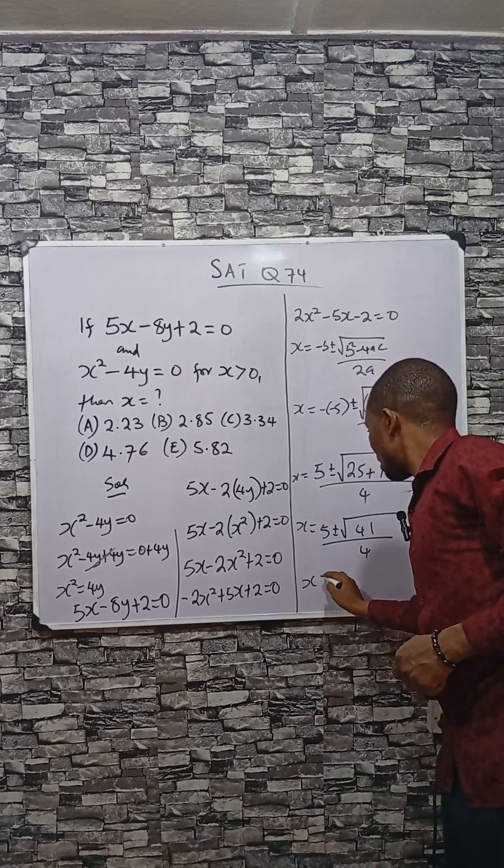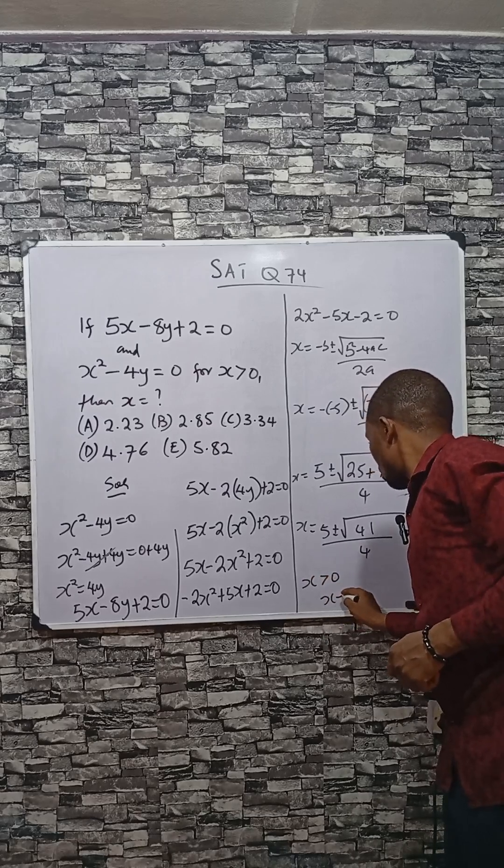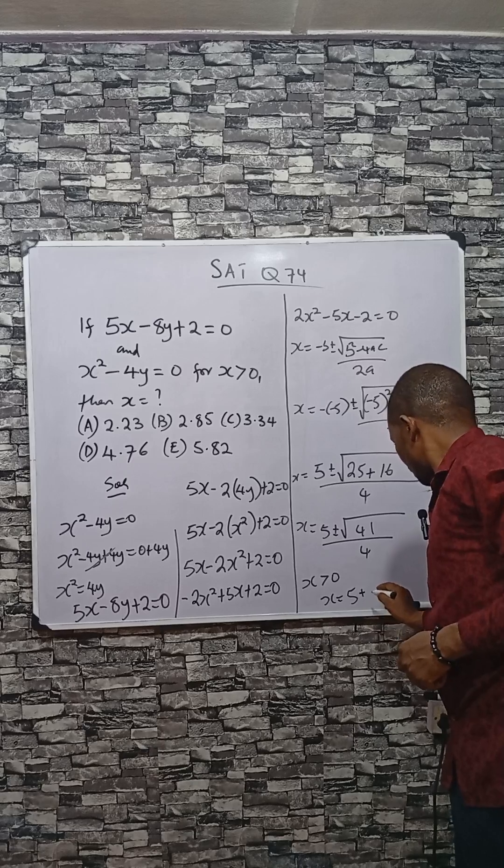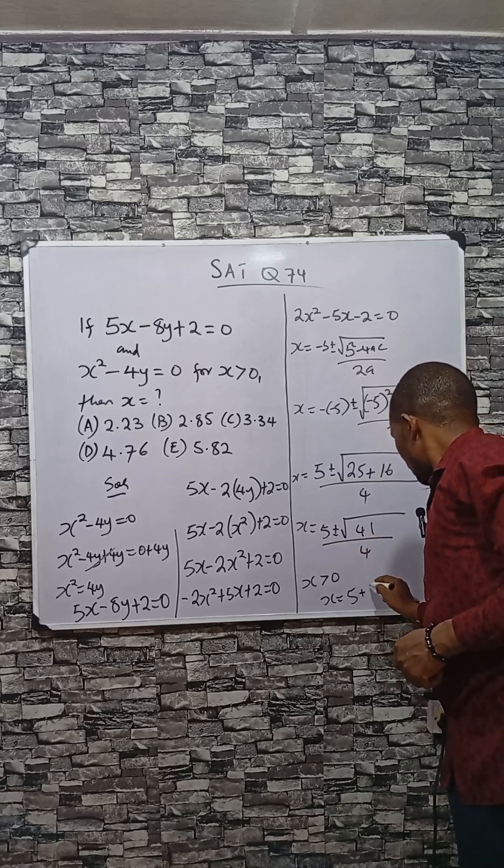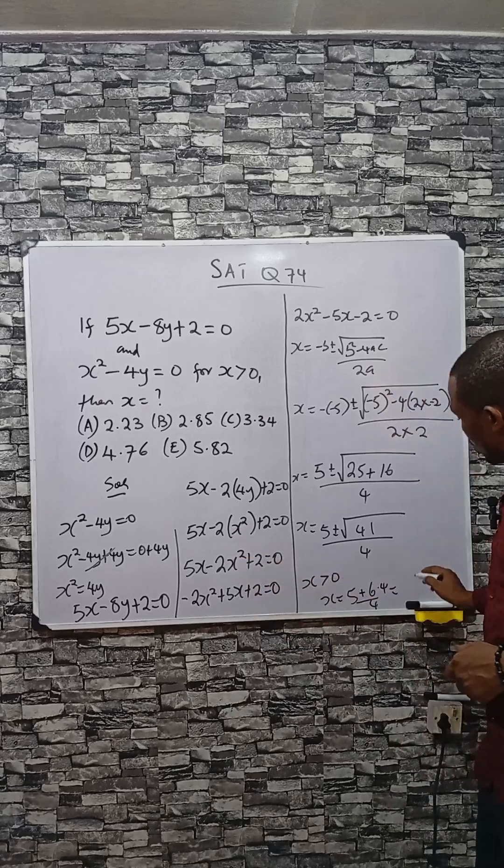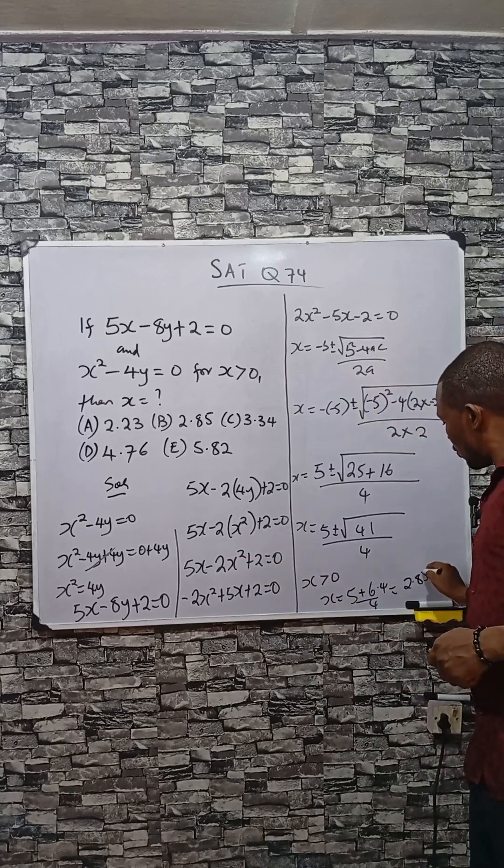From here we are considering values greater than zero, so we choose x = (5 + √41) / 4. If you use a calculator to check, you have 2.85.